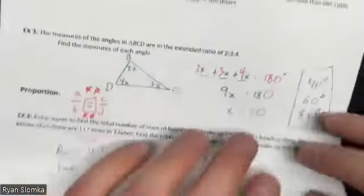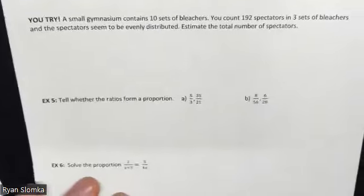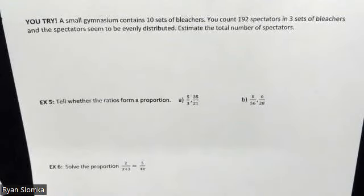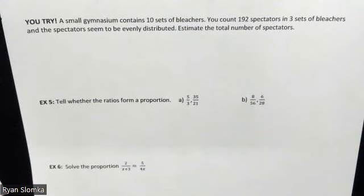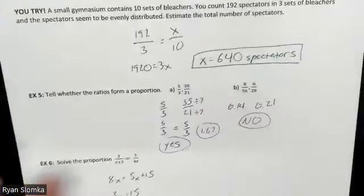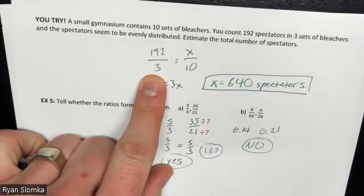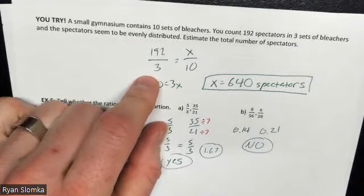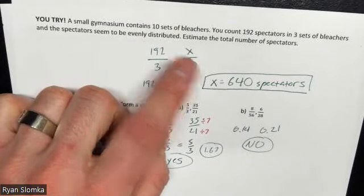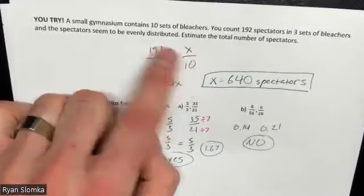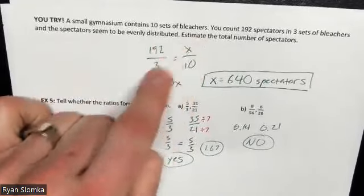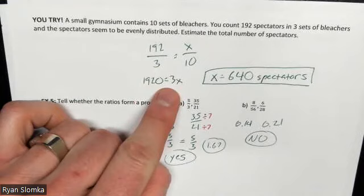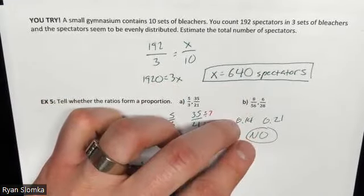Your turn: a small gymnasium has 10 sets of bleachers. You count 192 spectators in 3 sets of bleachers, and spectators are evenly distributed. Set up the proportion with spectators on top and sets on bottom: 192/3 = x/10. Cross multiplying gives 1920 = 3x. Dividing gives x = 640 spectators total.